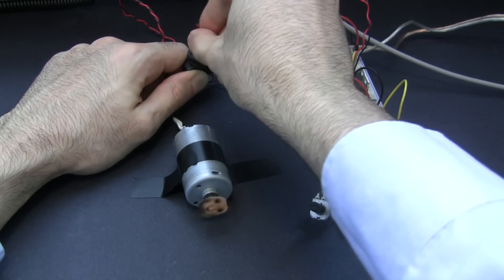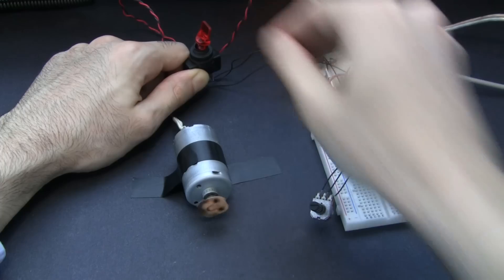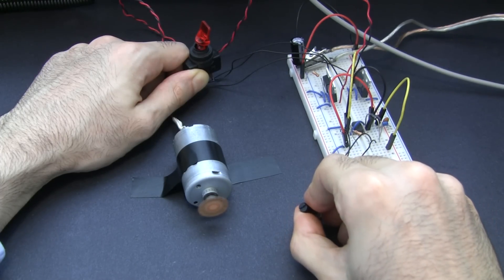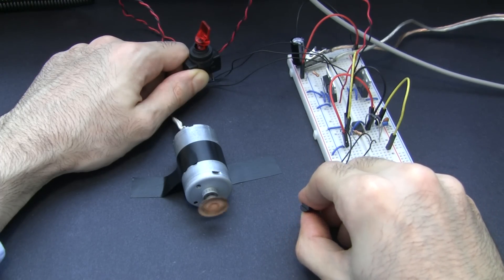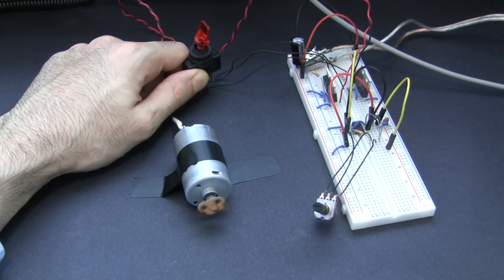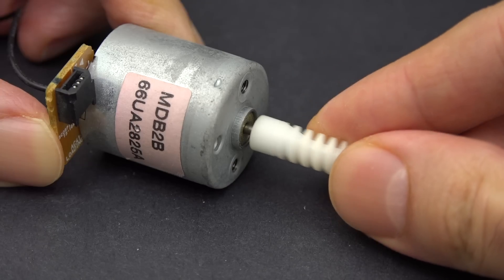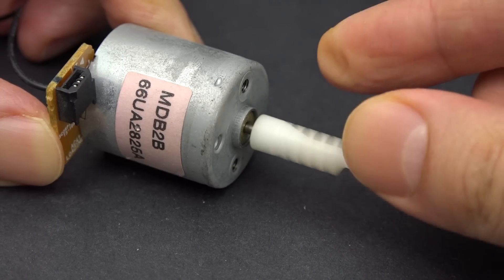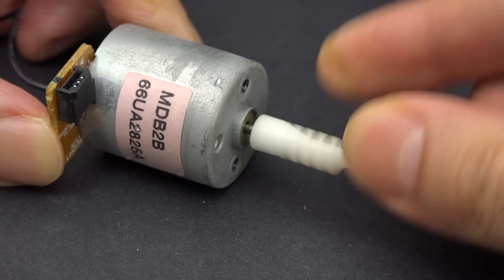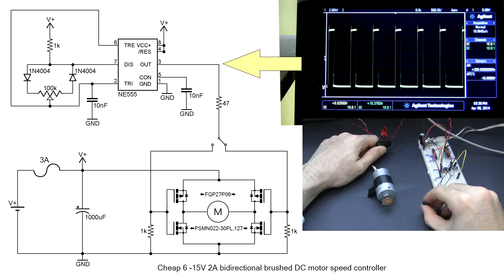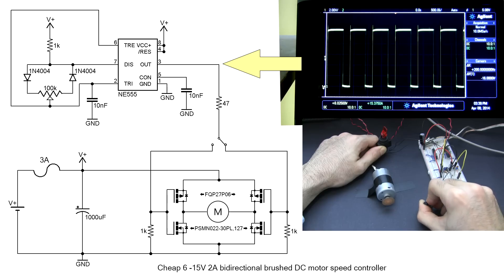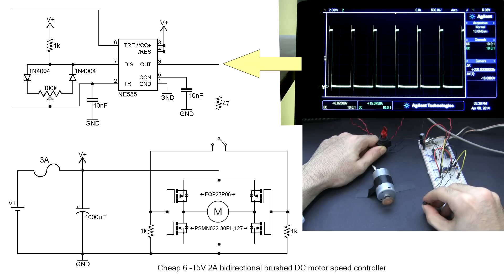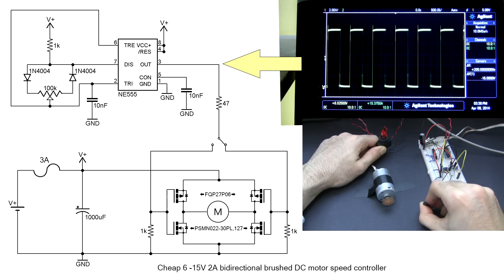In my previous video about H-bridges, I showed you a circuit that can control the speed and direction of a motor. But that's all it can do. The motor just moves faster or slower depending on the duty cycle. And if you put a load on the motor, it slows down. There's no way to accurately control how much the motor rotates. This is what is called an open loop control system - there's no way to regulate the output. You're just changing the power going to the motor and hoping for the best.